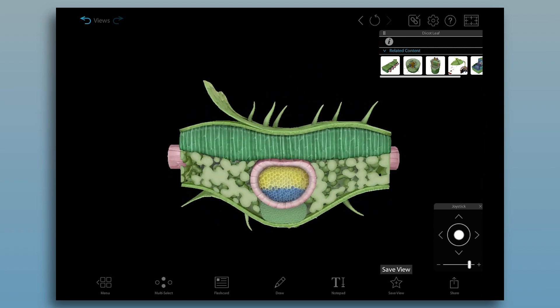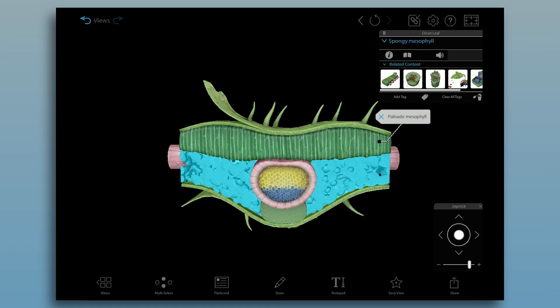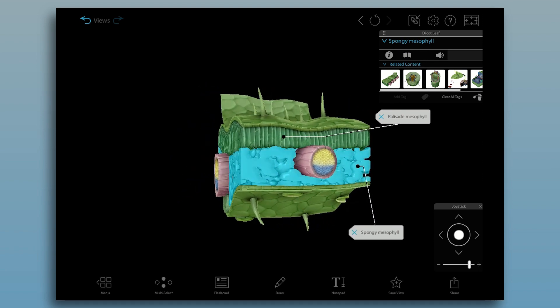Unlike monocot leaves, dicot leaves have two types of mesophyll. Palisade mesophyll has long, thin cells that are densely packed. The cells of spongy mesophyll are loosely arranged, allowing gases like carbon dioxide, oxygen, and water vapor to pass through easily.